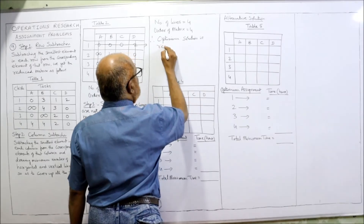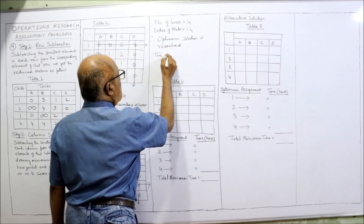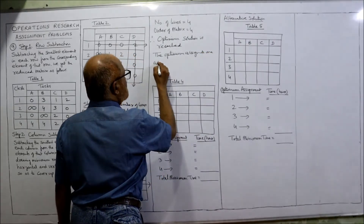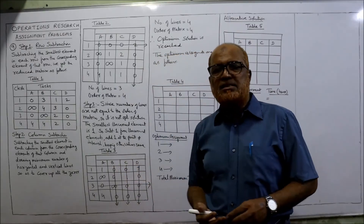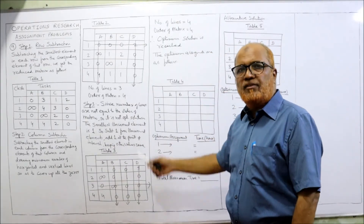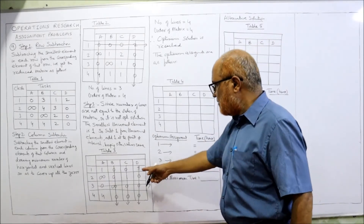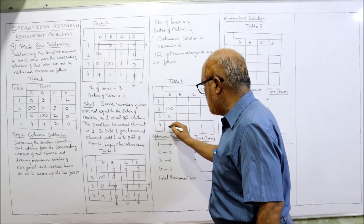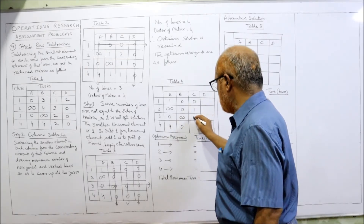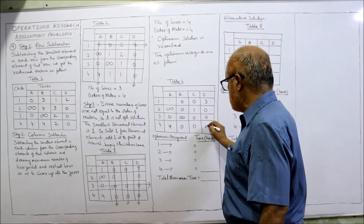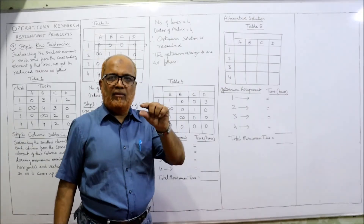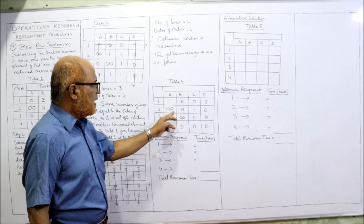The optimum solution is reached. The optimality test: if the number of lines equals the order of the matrix, we have reached the optimum solution — here four lines equals matrix order four. Now take the same values in the final matrix: row one has restriction, 0, 4, 0; row two has 0, restriction, 0, 0; row three has 1, 0, 0, 3 (approximately); row four has 0, 0, these are the elements.